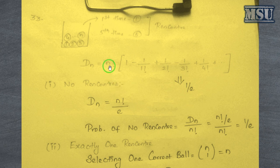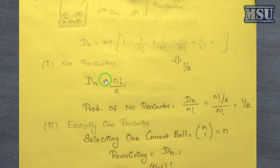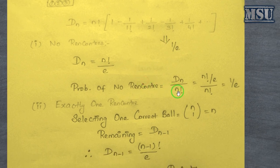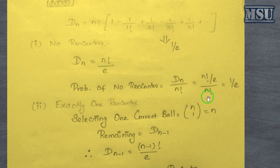No encounter occurs means that when taking n number of balls, at no time do you get the correct ball. So D(n) = n!/e. The problem asks for probability, so the total number of possible arrangements is n!. The number of derangements where no rencontre occurs is n!/e, giving a probability of (n!/e) / n! = 1/e.